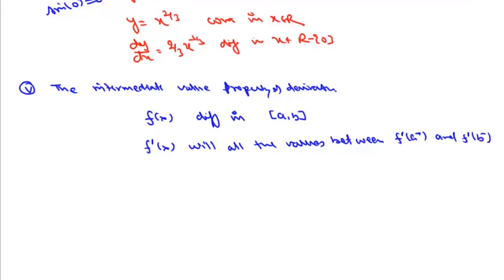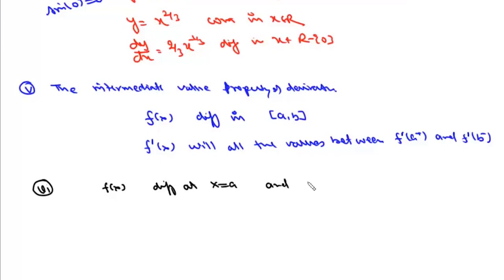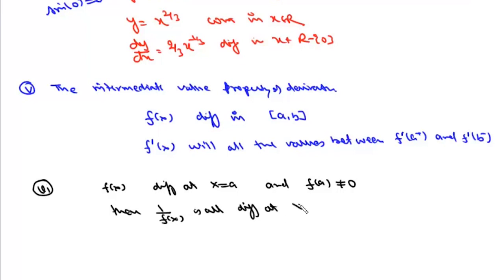The sixth result is also a theorem. It states: if a function f(x) is differentiable at x = a and f(a) ≠ 0, then 1/f(x) is also differentiable at x = a. This is essentially a corollary of the f(x)/g(x) differentiability result. Additionally, if f(x) is differentiable at x = a, then f²(x) is also differentiable at x = a, since it is a composition of x² and f(x), and x² is differentiable for all x ∈ ℝ.